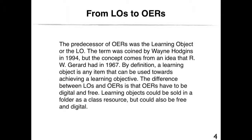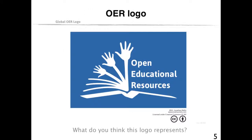The predecessor of OERs was the learning object, or LO. The term was coined by Wayne Hodgins in 1994, but the concept comes from an idea that R.W. Girard had in 1967. By definition, a learning object is any item that can be used towards achieving a learning objective. The difference between LOs and OERs is that OERs have to be digital and free, whereas learning objects could be sold in a folder as a class resource but could also be free and digital.